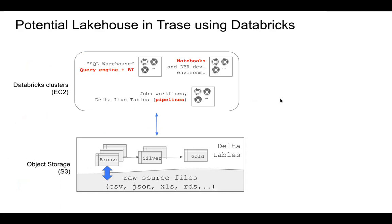What was explored was how to use this in Trace. The solution used was Databricks, though other solutions exist — Apache Iceberg, Apache Hoodie. Two weeks ago, Microsoft launched Microsoft Fabric, also based on the DeltaTable open format. In the future, Trace could have a simple data flow with collaborative notebooks in Python, R, Scala, or SQL, a query engine and business intelligence for analytical work, and the ability to define job workflows.